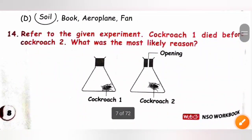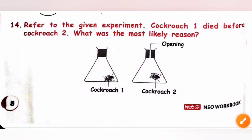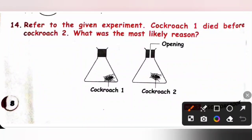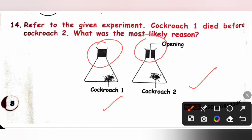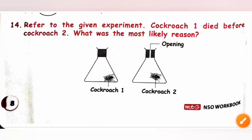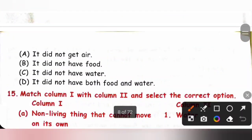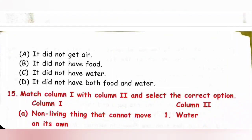Question 14: Cockroach 1 died before cockroach 2. What was the most likely reason? Cockroach 1 doesn't get any air because the mouth of the beaker is closed tightly, while cockroach 2 gets air because the container has an opening. Air is needed by living things to breathe; in the absence of air, living things die within a few minutes. So cockroach 1 died because it did not get air. Option A is the correct answer.